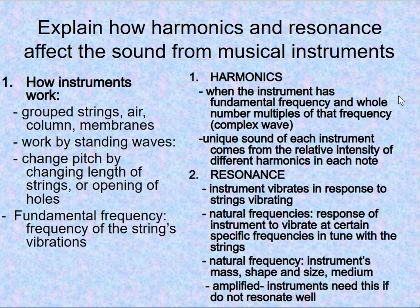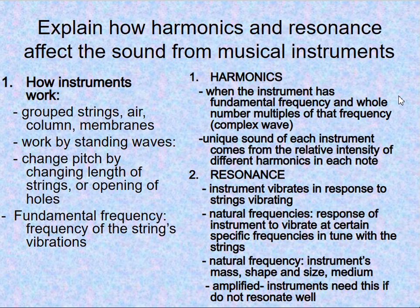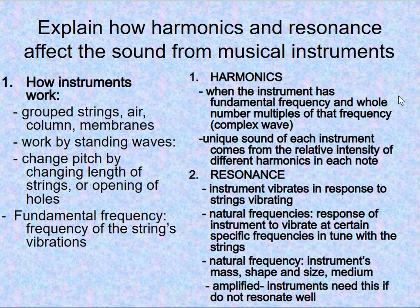We will explain how harmonics and resonance affect the sound from musical instruments. Grouped strings, air columns, and membranes work by standing waves that change pitch by changing the length of strings or opening of boards. The fundamental frequency is the frequency of the string's vibration. When the instrument has a fundamental frequency and whole number multiples of that frequency, it creates a complex wave. The unique sound of each instrument comes from the relative intensity of different harmonics in each note.